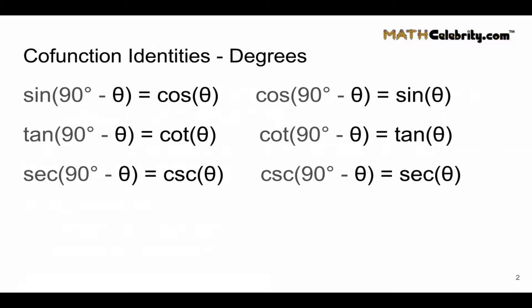Let's look at the co-function identities in degrees. Sine of 90 degrees minus theta equals cosine of theta. Similarly, if we flip the two, cosine of 90 degrees minus theta equals sine of theta. Next, the second group: tangent and cotangent. The tangent of 90 minus theta equals the cotangent of theta.